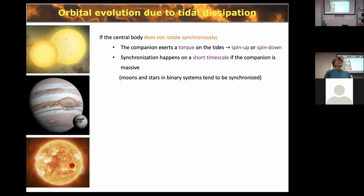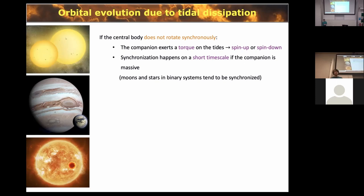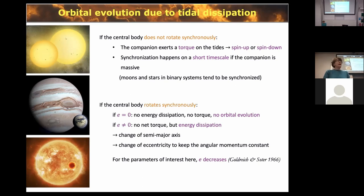When you have tidal interaction in a binary, if the body in which you raise the tide does not rotate synchronously — for example, the Earth rotates faster than the Moon orbits — then there is a torque exerted by the companion on the tides, leading to synchronization. That slows down the Earth so it eventually co-rotates with the Moon's orbital period. If the companion is massive enough, synchronization happens very fast. Most moons and stars in the binary systems I consider are actually synchronized.